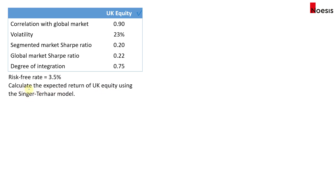We'll calculate the risk premiums under two different scenarios: perfect integration and complete segmentation. Starting with perfect integration with the global market, the risk premium for UK equity equals the correlation of 0.9, times the volatility of the asset class of 23%, times the Sharpe ratio of the global market of 0.22. Computing this gives us 4.554%.